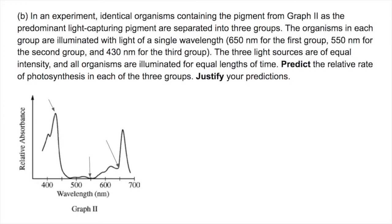In an experiment, identical organisms containing the pigment from graph 2 as the predominant light-capturing pigment are separated into three groups. The organisms in each group are illuminated with light from a single wavelength: 650 nm for the first group, 550 nm for the second group, and 430 nm for the third group. The three light sources are of equal intensity, and all organisms are illuminated for equal lengths of time.